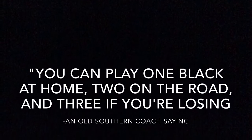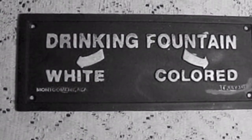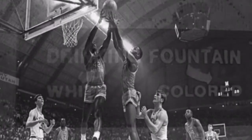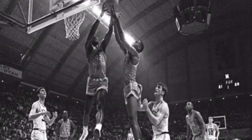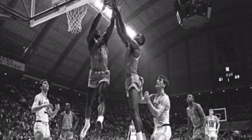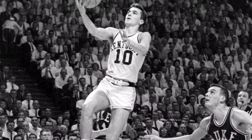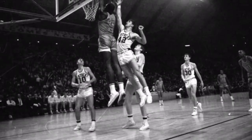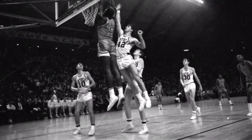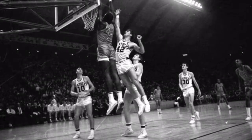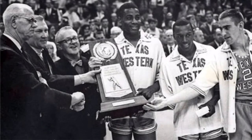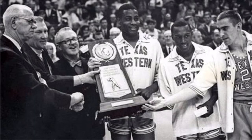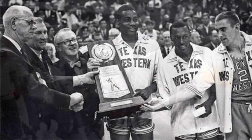"You can play one black at home, two on the road, and three if you're losing" — in the struggle for civil and political rights for African Americans in the United States, Texas Western College upset perennial powerhouse the University of Kentucky in the 1966 basketball championship game. Neither the 14,523 people in attendance at Maryland's Cole Field House nor the millions tuned in on TV and radio knew the significance of this game at the time.